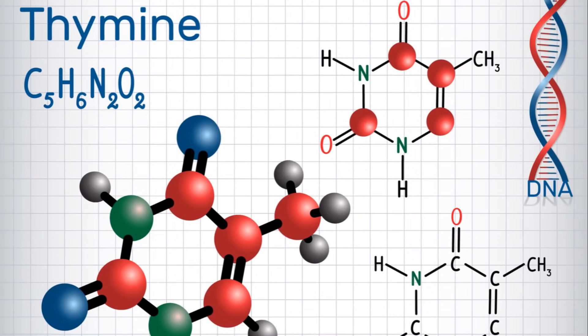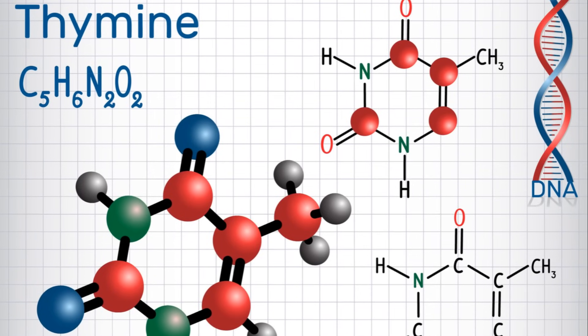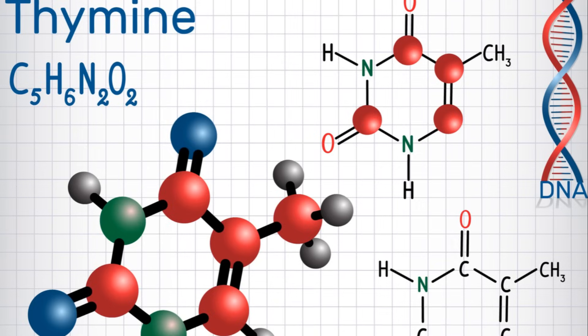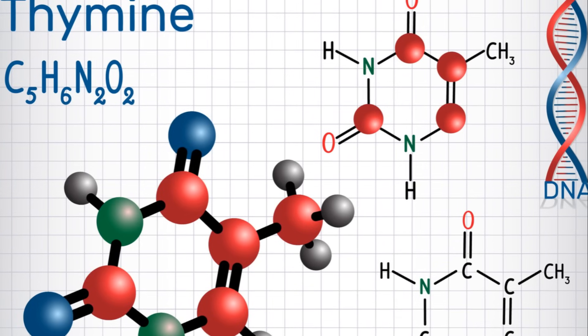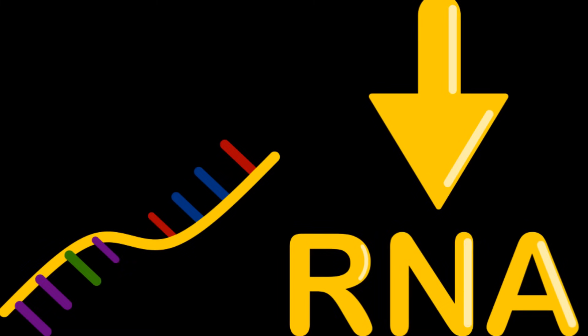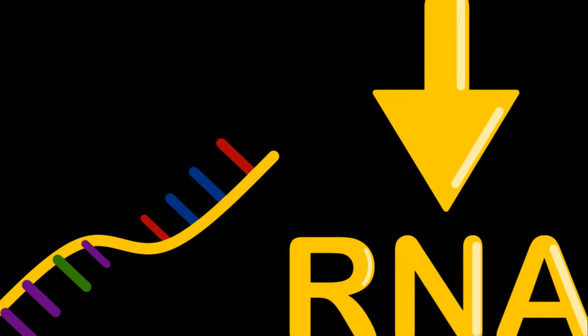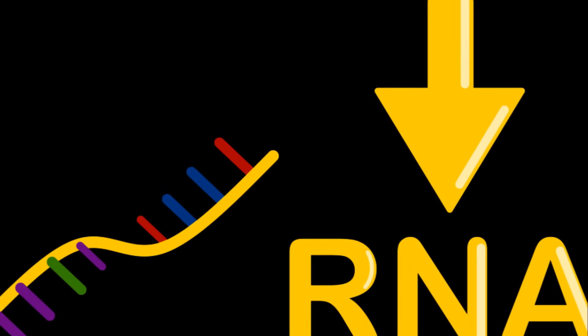Last but not least, we have thymine in DNA and uracil in RNA. Thymine, or T, pairs with adenine and is a key component in the structure of DNA. Uracil, or U, replaces thymine in RNA, playing a vital role in the process of transcription, where the DNA blueprint is converted into an RNA template.